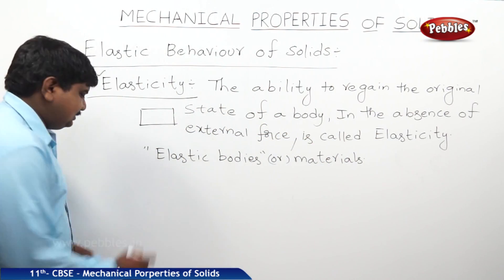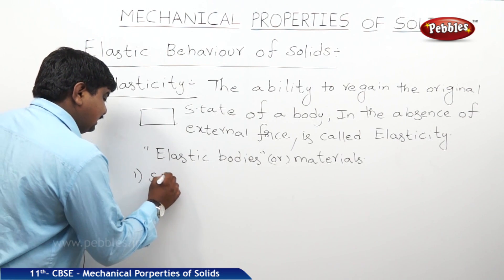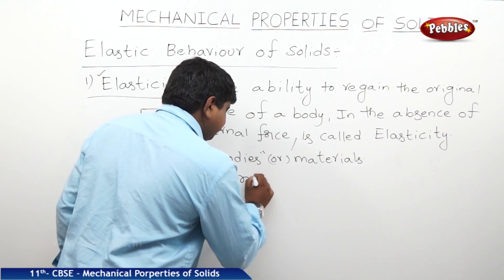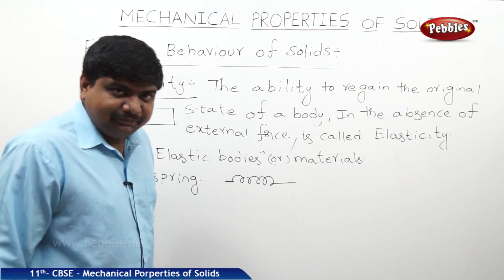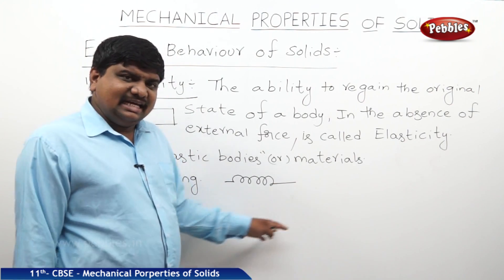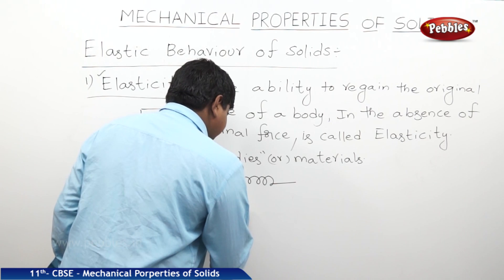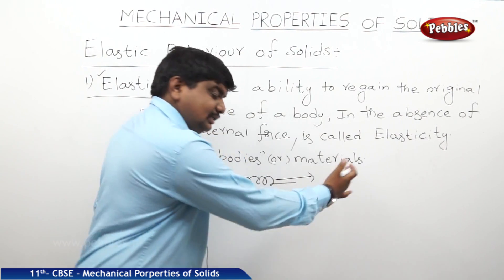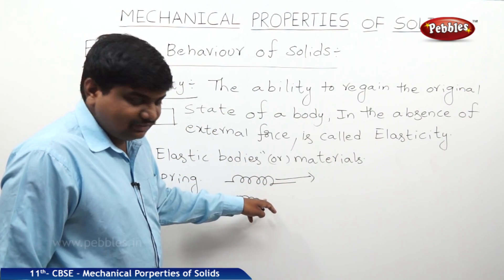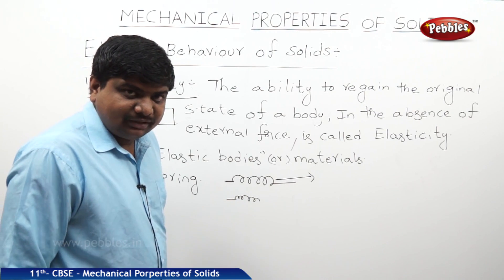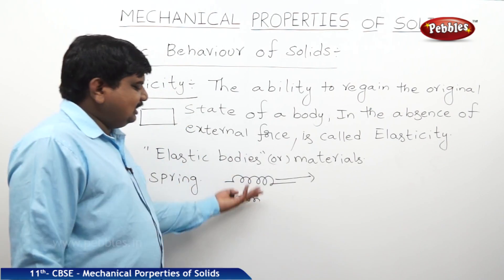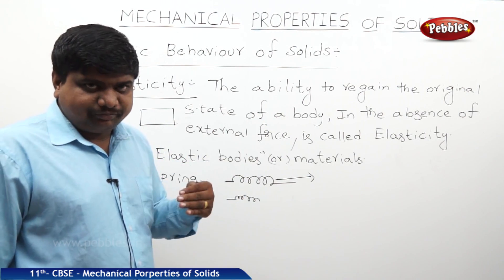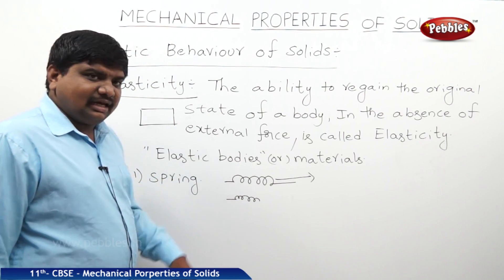Examples of elastic bodies — the best example is a spring. If you take a spring which is in a uniform shape initially, and you apply force from one end, it will compress. If the force is applied in the forward direction, it expands; if applied in the backward direction, it compresses. After removal of the external force, the spring automatically regains its original state — original length, original area, and original volume. So spring is one of the examples of an elastic body.